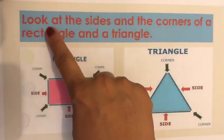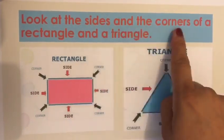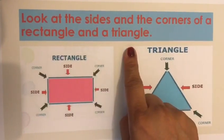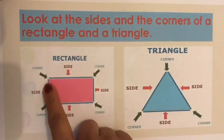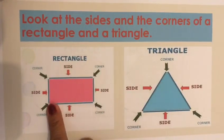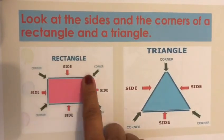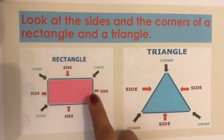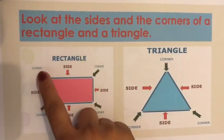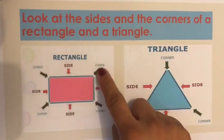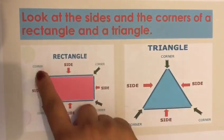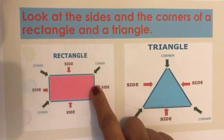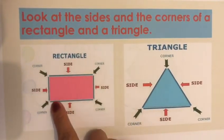Let's look at the sides and the corners of a rectangle and a triangle. This shape is called a rectangle. These are the sides and these are the corners. You can see the arrow — these are the four corners and these are the four sides.